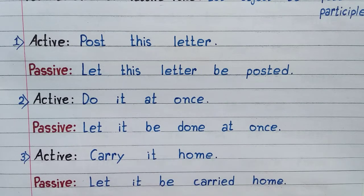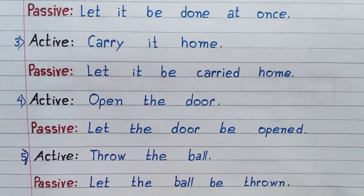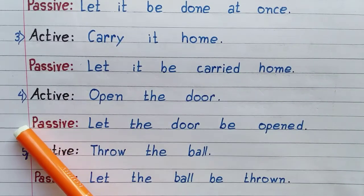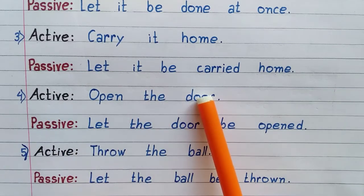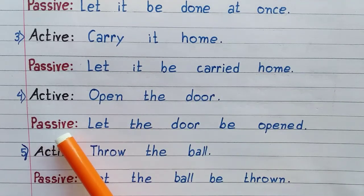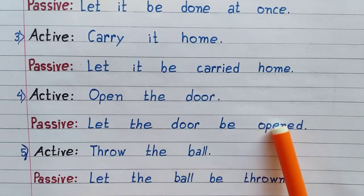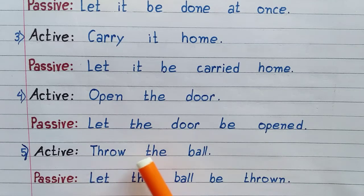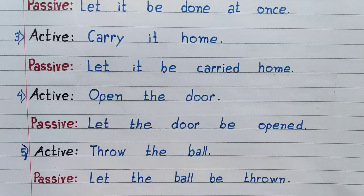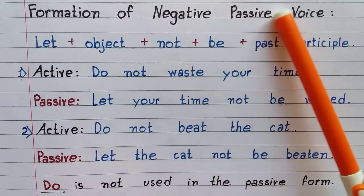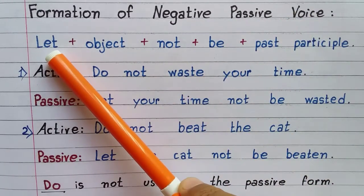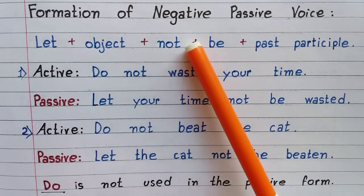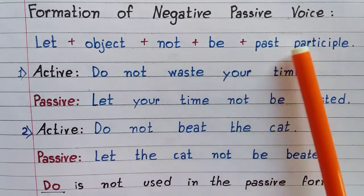...it be carried home. Number four — Active: open the door. Passive: let the door be opened. Number five — Active: throw the ball. Passive: let the ball be thrown. Formation of negative passive voice: let plus object plus not plus be plus past participle.